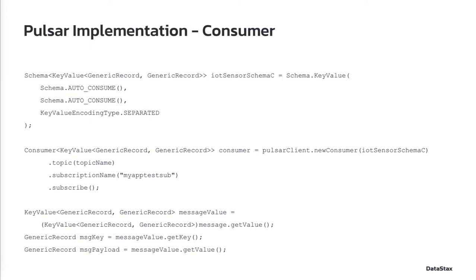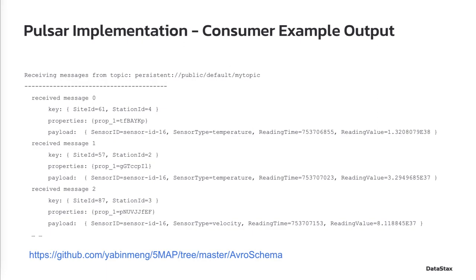Please note that we use generic record and auto-consume here to simplify the message processing. This is an example of the consumer output displaying the received messages. Note that all the components of a received message are properly displayed, including message keys, message properties, and message payload. The GitHub code repository for this example is also included on this page.